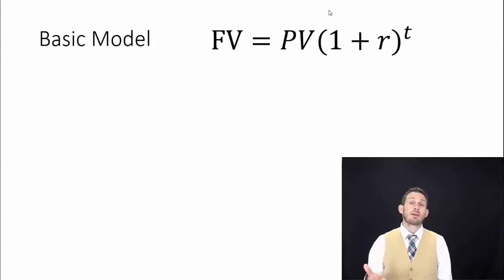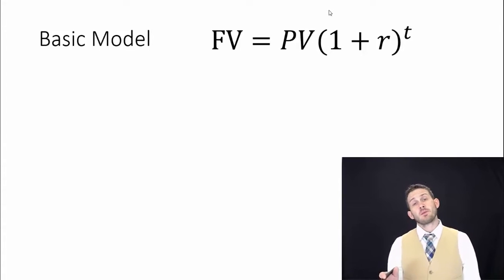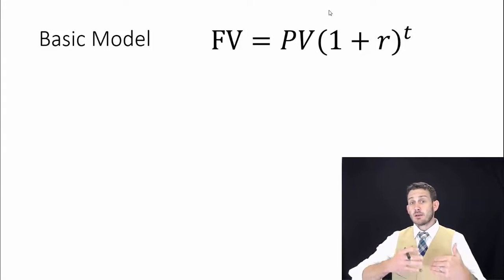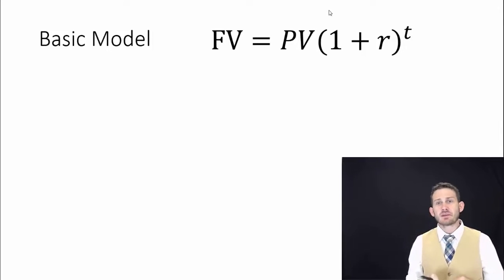This is our basic model: future value equals the present value multiplied by one plus r to the t power. This equation here is such a basic fundamental equation. We rearrange this, we do a lot of stuff. Almost everything we're going to be doing throughout my class is using this equation, just setting it up in slightly different manners.